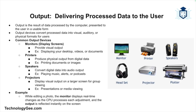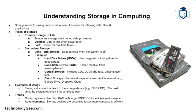Finally, we come to storage. Storage in computing refers to saving data for future use. There are two main types you should be aware of. The first is primary storage, or RAM. As mentioned earlier, RAM is where data is stored temporarily while it's being used or processed by the CPU. It's fast but volatile, meaning all data stored in RAM is lost when the computer is powered off.